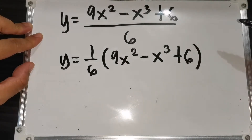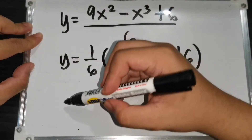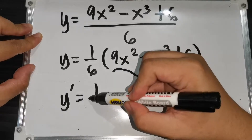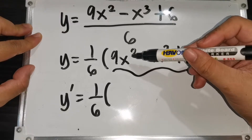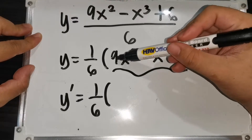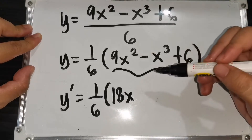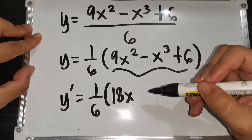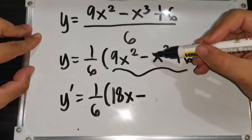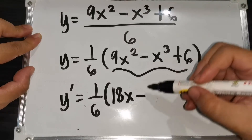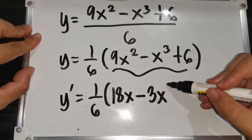Now in taking the first derivative, we take the derivative of the terms and multiply by 1/6. The derivative of 9x² is 18x (multiply exponent 2 by coefficient 9 to get 18, subtract 1 from exponent). Minus: multiply exponent 3 by coefficient 1 to get 3, copy variable x, subtract 1 from exponent to get x².